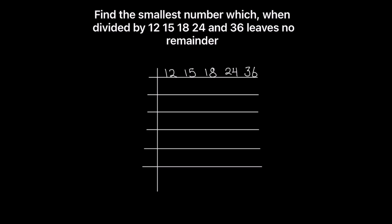Out of these numbers, only 15 is an odd number and the rest are even. So let's use 2 to divide the numbers: 2×6=12, 15 stays as is, 2×9=18, 2×12=24, and 2×18=36. Again using 2: 2×3=6, 15 stays as is since it is not fully divisible by 2, and 9 is also not fully divisible by 2.